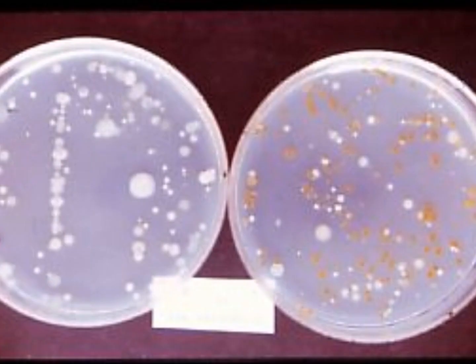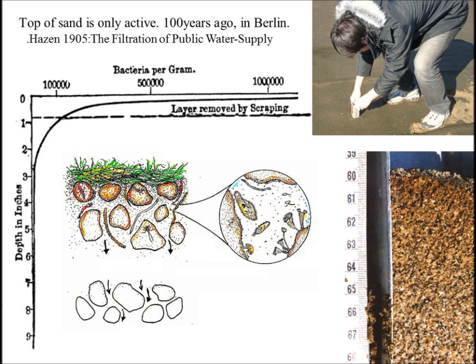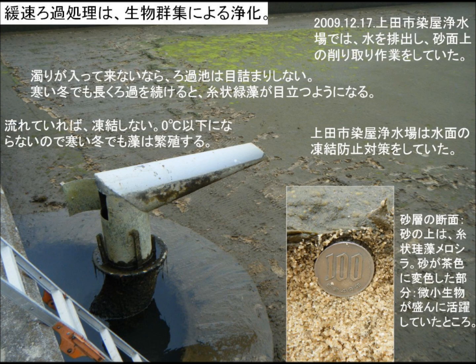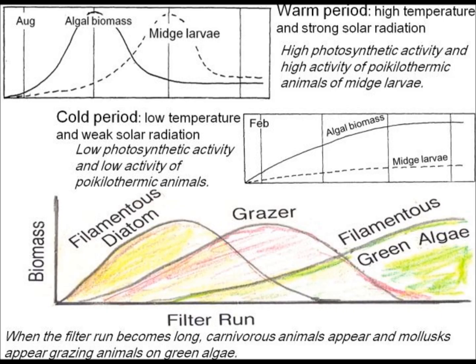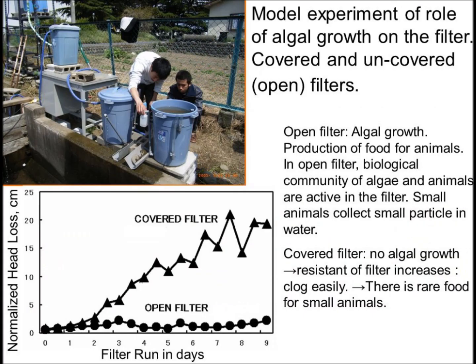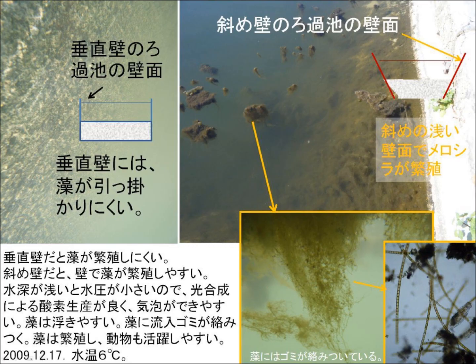The vertical distribution pattern of bacteria was also the same as the animal distribution profile. At the beginning of the filter pond, filamentous diatoms dominated. After that, filamentous green algae grew. And molasses were also seen in the long filter pond.